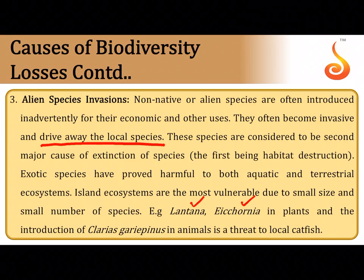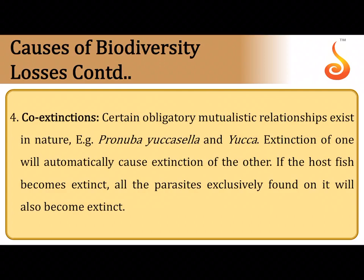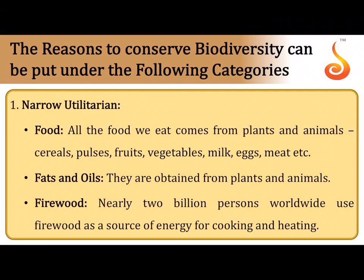The African catfish Clarias gariepinus, introduced for aquaculture benefits, has become a threat to local catfish in rivers and water bodies. Co-extinction: if one species becomes extinct, another that depends on it may also become extinct. For example, the Yucca plant will become extinct if the moth Pronuba yuccasella becomes extinct because they cannot live without each other — such close plant-pollinator relationships can be disastrous when one goes extinct.